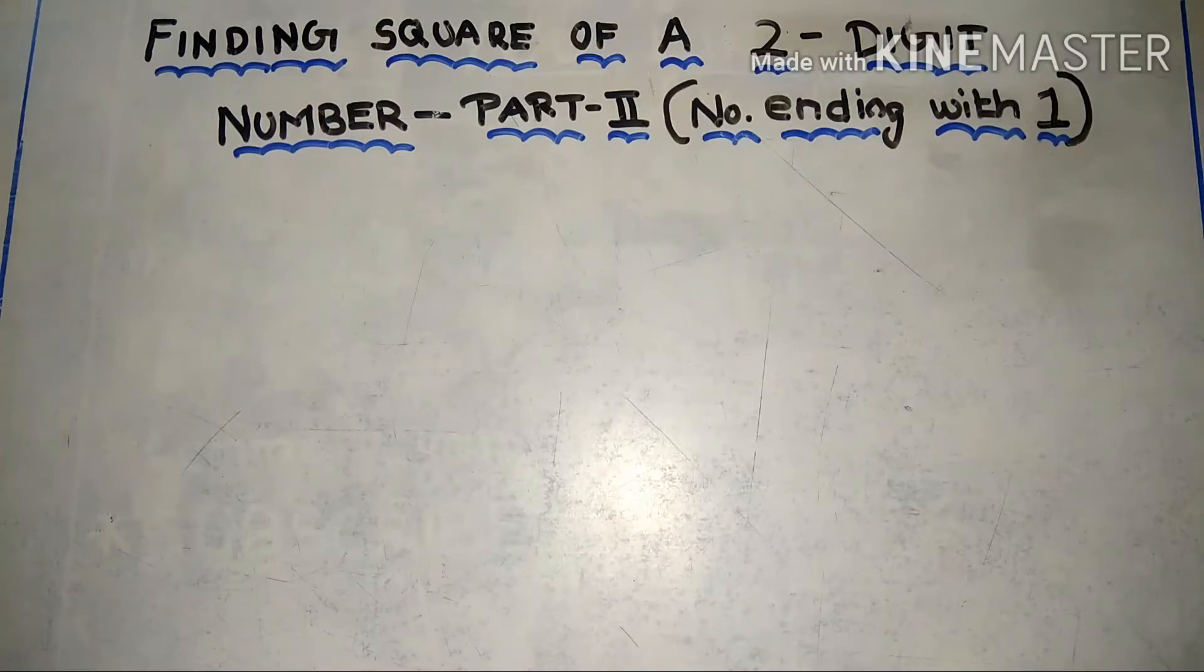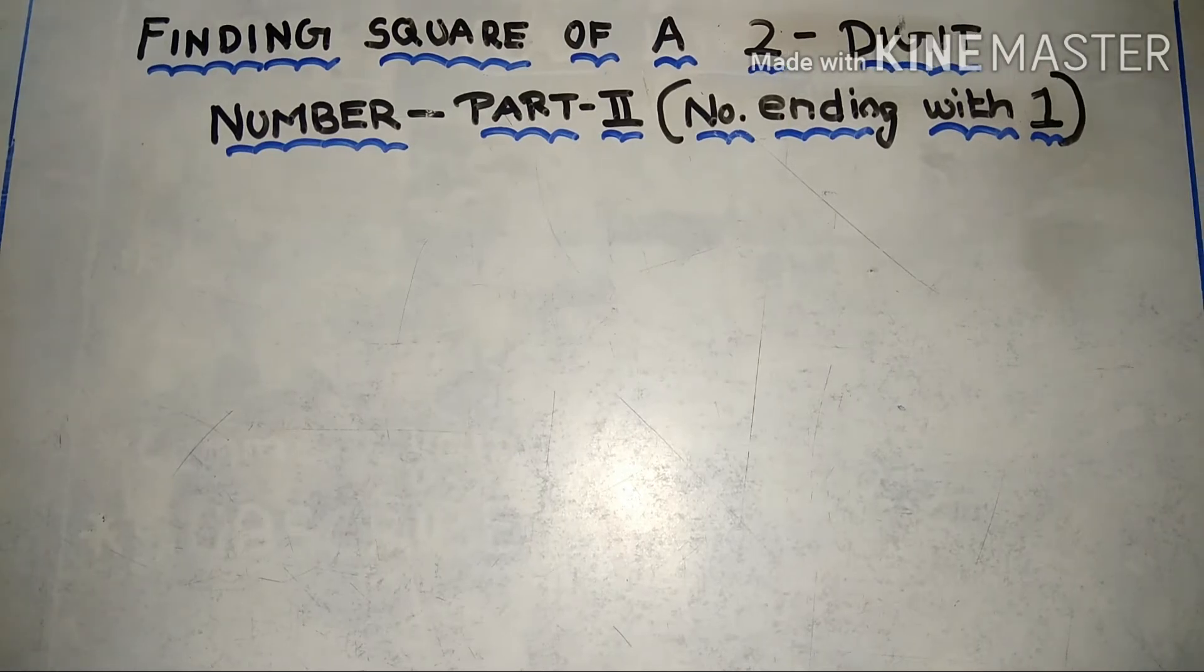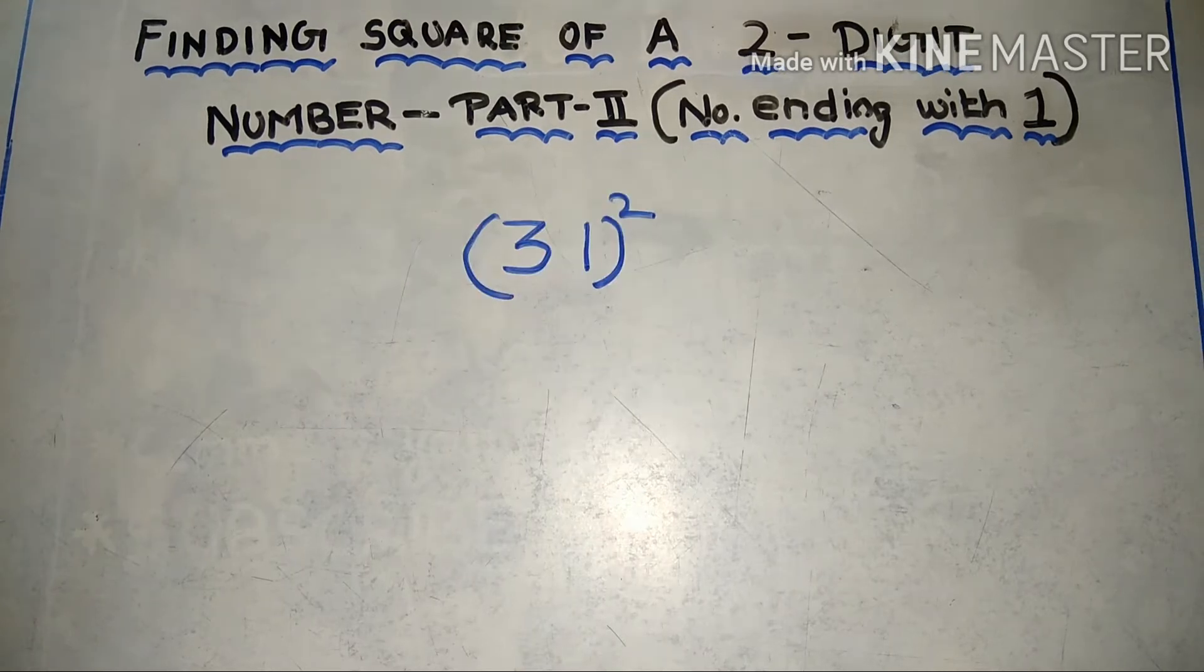Hi everyone, welcome back to Active Forest. Today we are going to learn about finding the square of a two-digit number ending with one. To explain this method, let's take an example: 31.